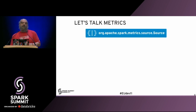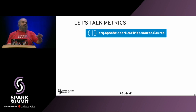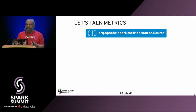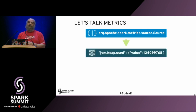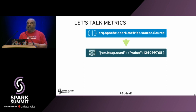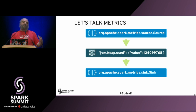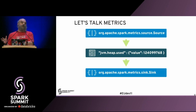To begin with, Spark has a concept of metric sources. This is the base class for all sources that produce data - these sources emit values. We're looking here at something coming from the JVM source, seeing how much memory is used in the heap. Those values go to what are called sinks - the base class for all sinks. Sinks are a way to take your metrics out of Spark and publish them somewhere.